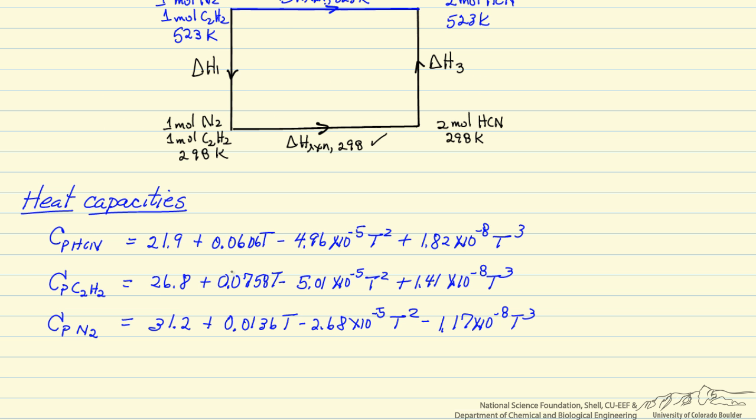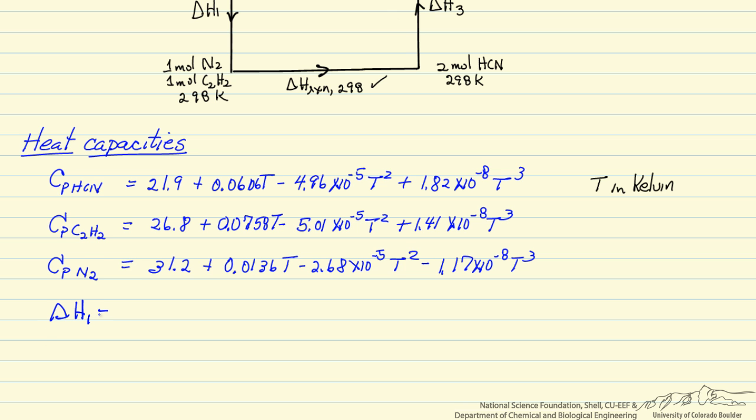So here are the heat capacities as a function of temperature where the temperature is in Kelvin in these equations. We will first calculate delta H1. So delta H1 is going to be the integral from our starting temperature, 523, to our final temperature, 298. The heat capacity of nitrogen plus the heat capacity of acetylene and we are going to integrate over this temperature range.